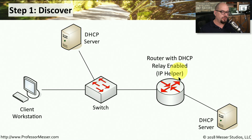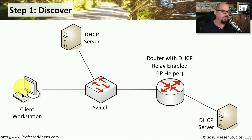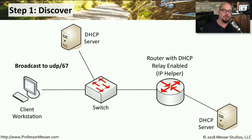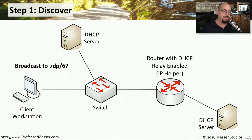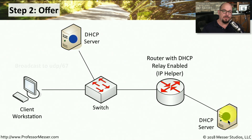When we first turn on our client workstation, it does not have an IP address, so it's going to send a broadcast out to UDP port 67 over the network. This broadcast will make its way to every device on our local subnet, and it will eventually end up at the DHCP servers that have been configured on our network.